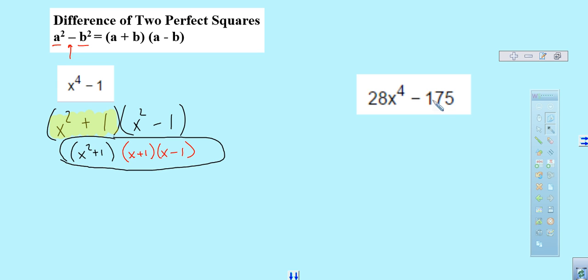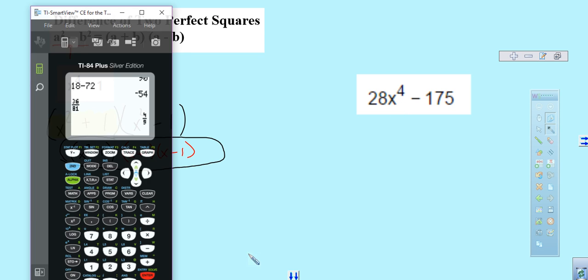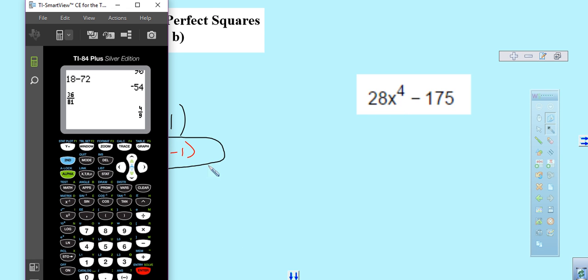2 goes into 28, but 2 doesn't go into 175. 3 might go into 175, but 3 doesn't go into 28. So, what about 4? We know 4 goes into 28. Does 4 go into 175? So, we test it. We pull out our calculator, we test. No.